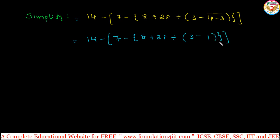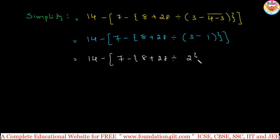Next, simplify the innermost small bracket: 3 - 1 = 2. The expression now reads 14 - [7 - {8 + 28 ÷ 2}]. Following BODMAS, perform division first within the curly bracket: 28 ÷ 2 = 14. So the curly bracket becomes 8 + 14 = 22. Step by step, you avoid mistakes.